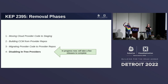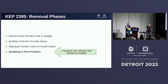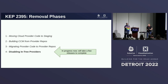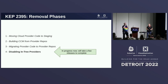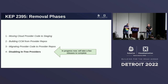As you can see, this is enumerated in the KEP — there were four main phases we were moving through. We've gone through the process of moving the cloud provider code from the Kubernetes repo into the staging portion, building the CCM library that allows us to reuse that code, then copying the code from the Kubernetes repo into the specific cloud provider repos. And now we're at phase four, which is disabling them.